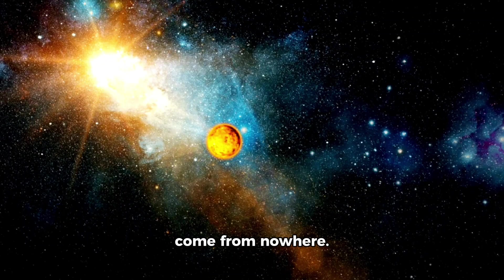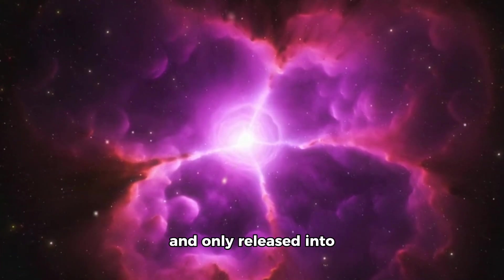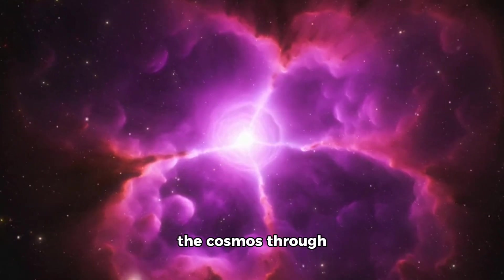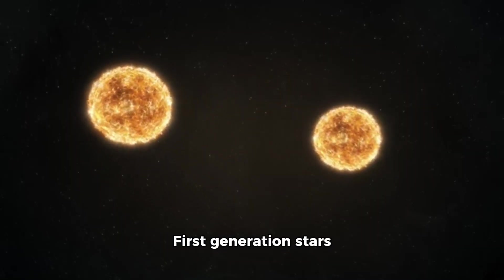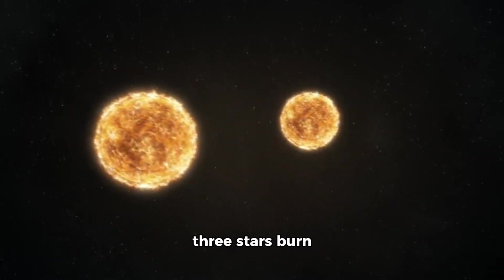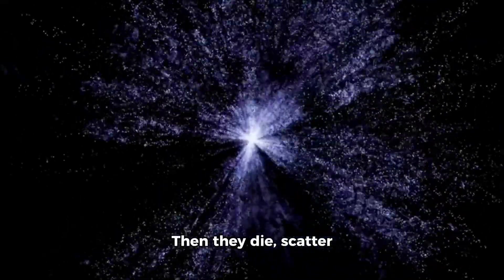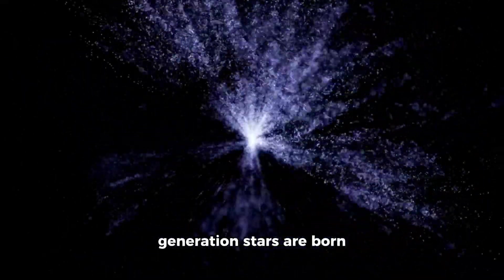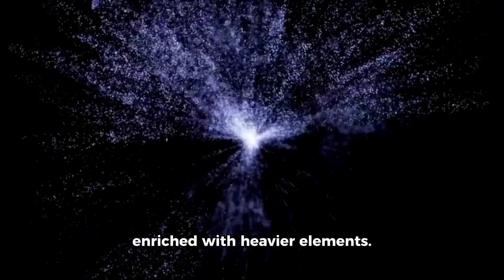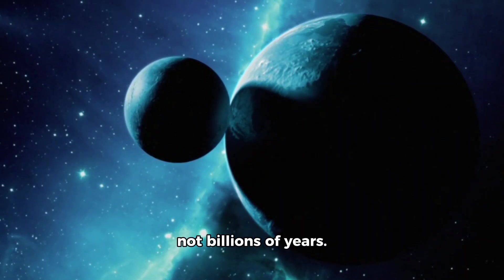These elements don't come from nowhere. They're forged in the hearts of massive stars and only released into the cosmos through supernova explosions. That process takes time. First-generation stars called population three stars burn hydrogen and helium. Then they die, scatter their contents, and eventually second-generation stars are born enriched with heavier elements. That entire sequence should have taken hundreds of millions, if not billions of years.